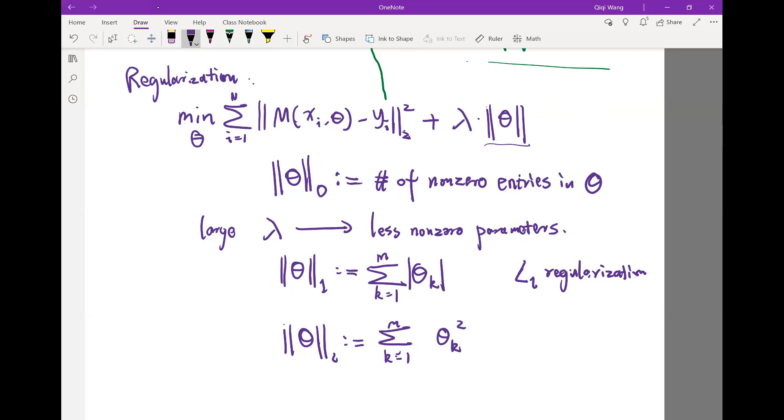So this L2 regularization is even more computationally attractive because the additional term is not only continuous but also differentiable at all points. But it doesn't yield the kind of sparsity that you get from L1 regularization because it doesn't usually force any parameters to go to zero.